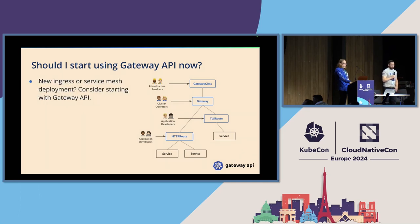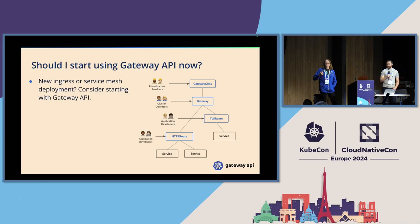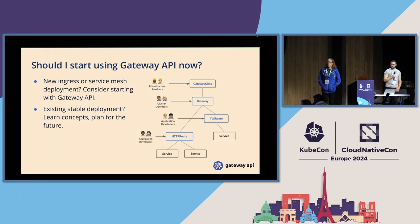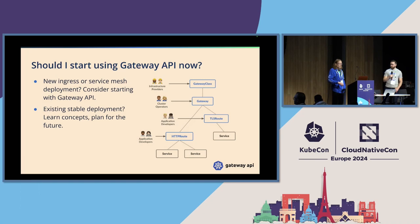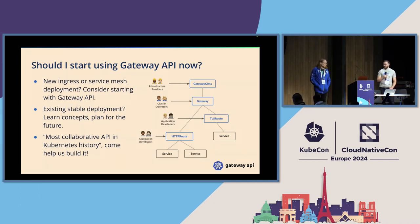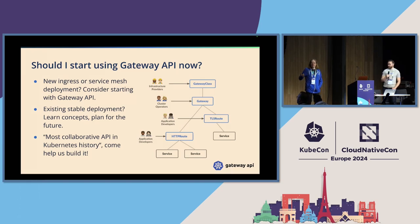Should you start using Gateway API now? Probably — if you're starting fresh, you should definitely look hard at it. If you have an existing deployment, it might be more useful to just learn how it works rather than immediately porting everything over. Gateway API still can't do everything, but it's still good to learn about. The project has had amazing community collaboration — it has been called the most collaborative API in Kubernetes both by individual contributors and organizations.